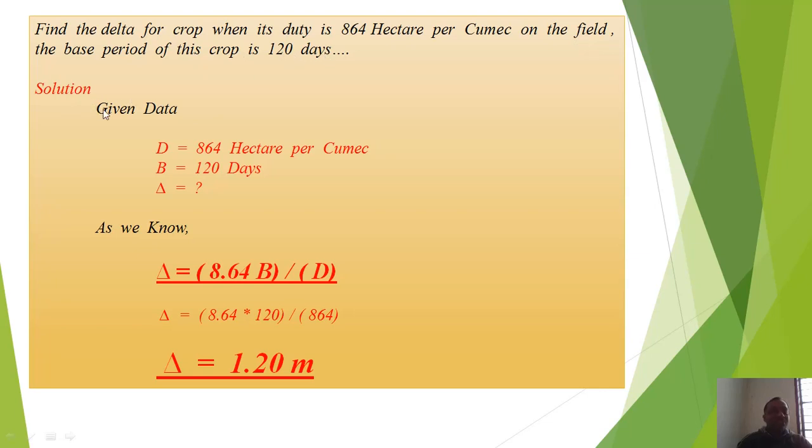Solution: Given data - D equals 864 hectare per cumec, base period is 120 days, delta we need to find. As we know, delta equals (8.64 × B) / D. So delta equals (8.64 × 120) / 864.